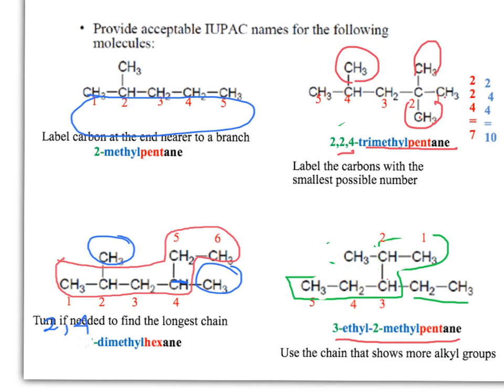We need to select always the hydrocarbon chain that is giving us more alkyl substituents. If I select this one as my longest hydrocarbon chain, I will only have an isopropyl substituent. But that is wrong. According to the convention by IUPAC, what we want is to have as many alkyl substituents as possible. So for this case, the longest hydrocarbon chain must be the one that provides more alkyl substituents. This one will be a 3-ethyl-2-methylpentane.